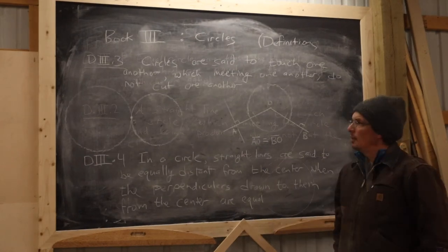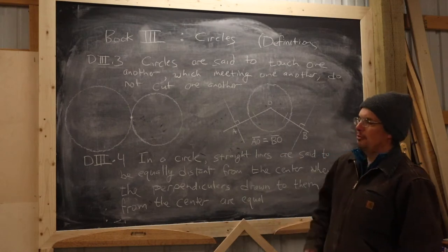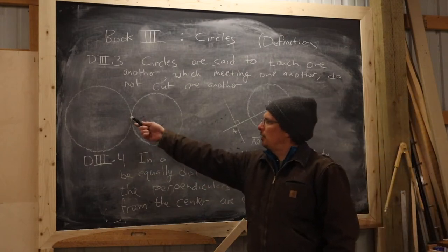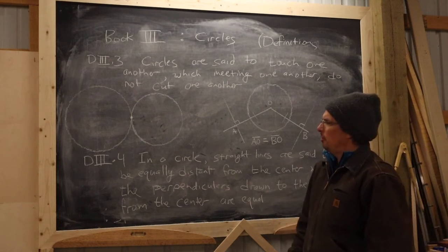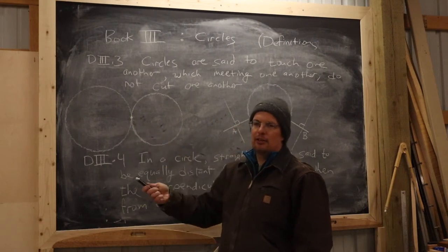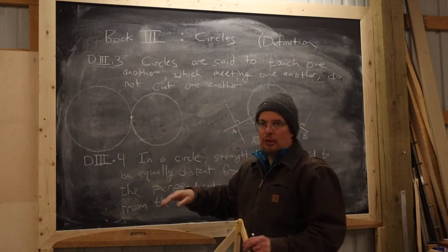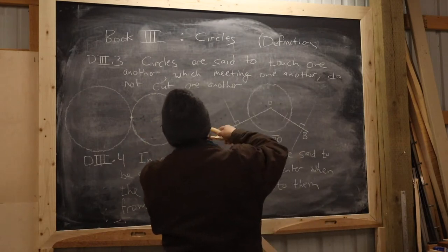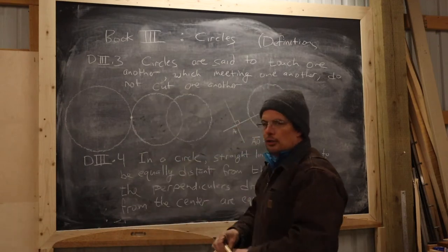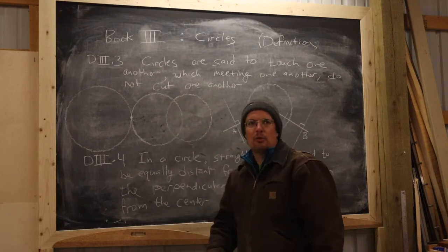If a line can touch a circle, then two circles ought to be able to do that as well. Definition three says circles are said to touch one another when, meeting one another, they do not cut one another. You don't have one point where the circles meet and then find another intersection further along. An example: these two circles touch one another — they are tangent at this one point. These two other circles are not tangent; they meet at one point, and continuing around, you find another intersection — that's a cut.